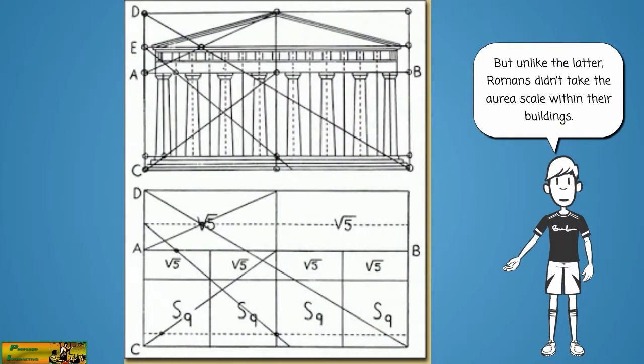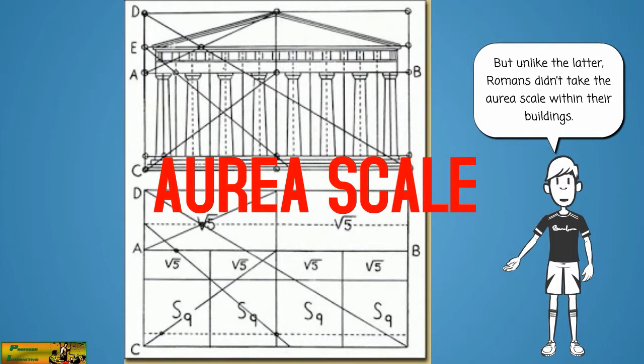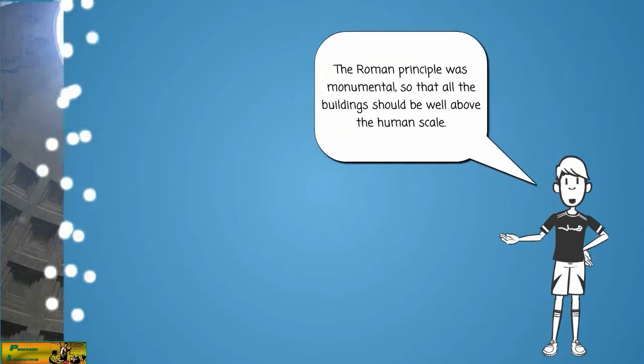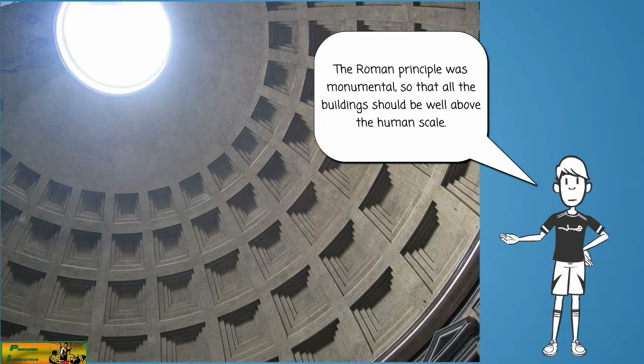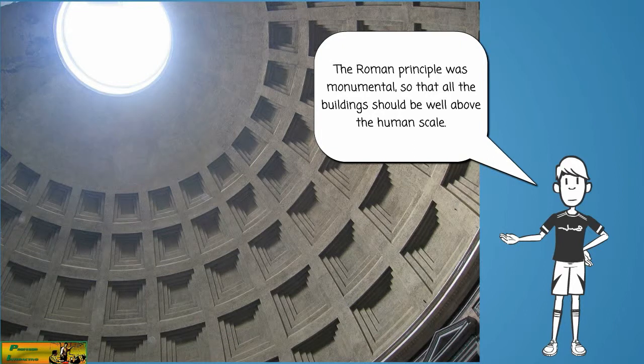But unlike the latter, Romans didn't take the aurous scale within their buildings. The Roman principle was monumental, so that all the buildings should be well above the human scale.